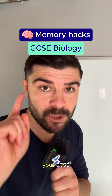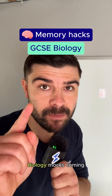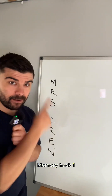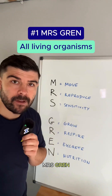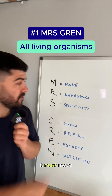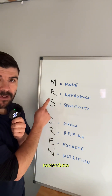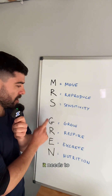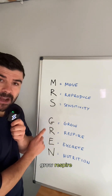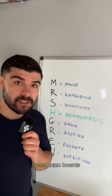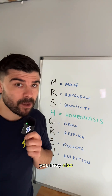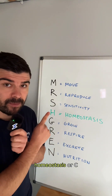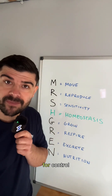Save this video if you've got your GCSE biology mocks coming up soon. Memory hack one: Mrs. Gren. For an organism to be alive it must move, reproduce, have sensitivity to its environment, it needs to grow, respire, excrete and require nutrition. For some exam boards you may also need to remember either H for homeostasis or C for control.